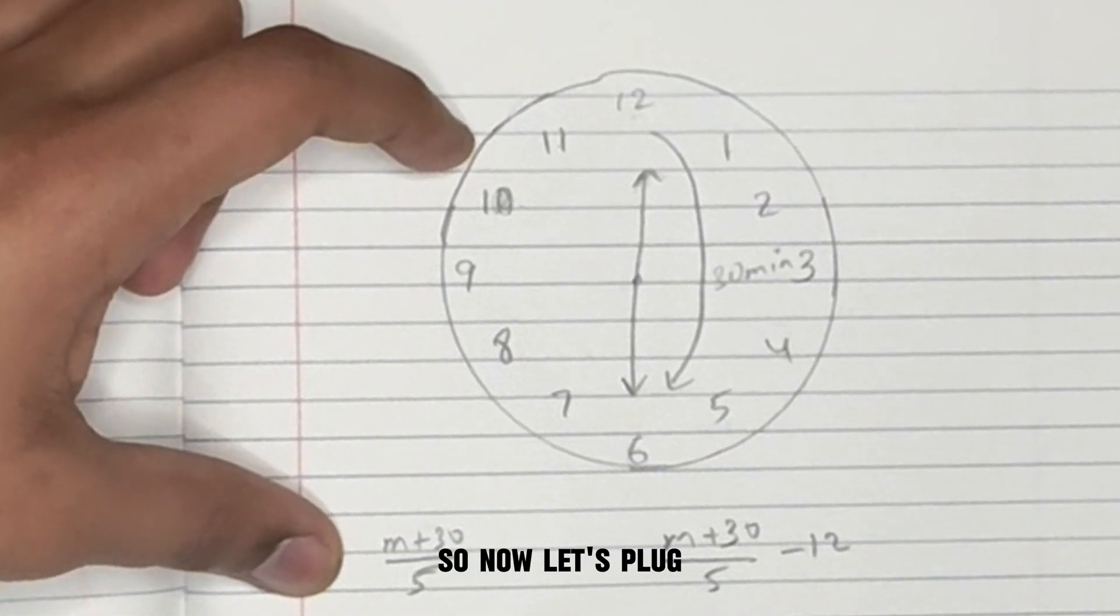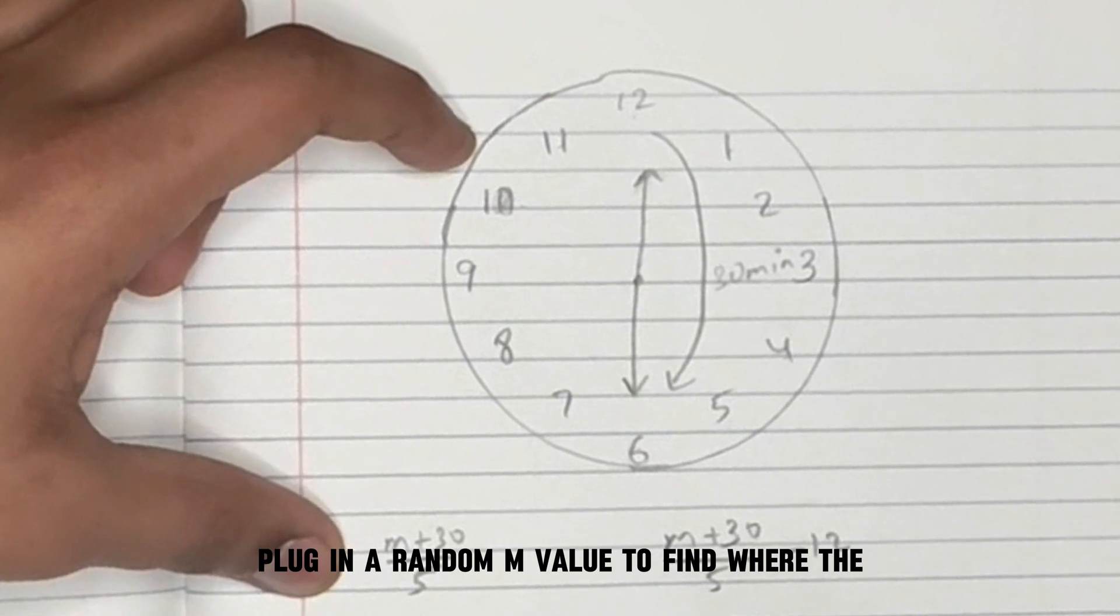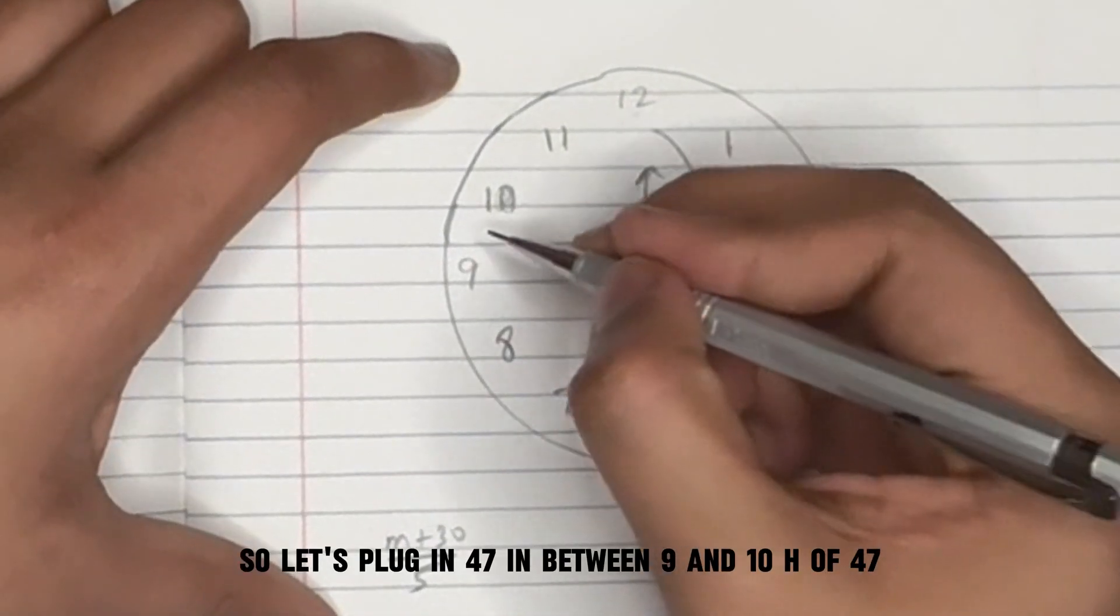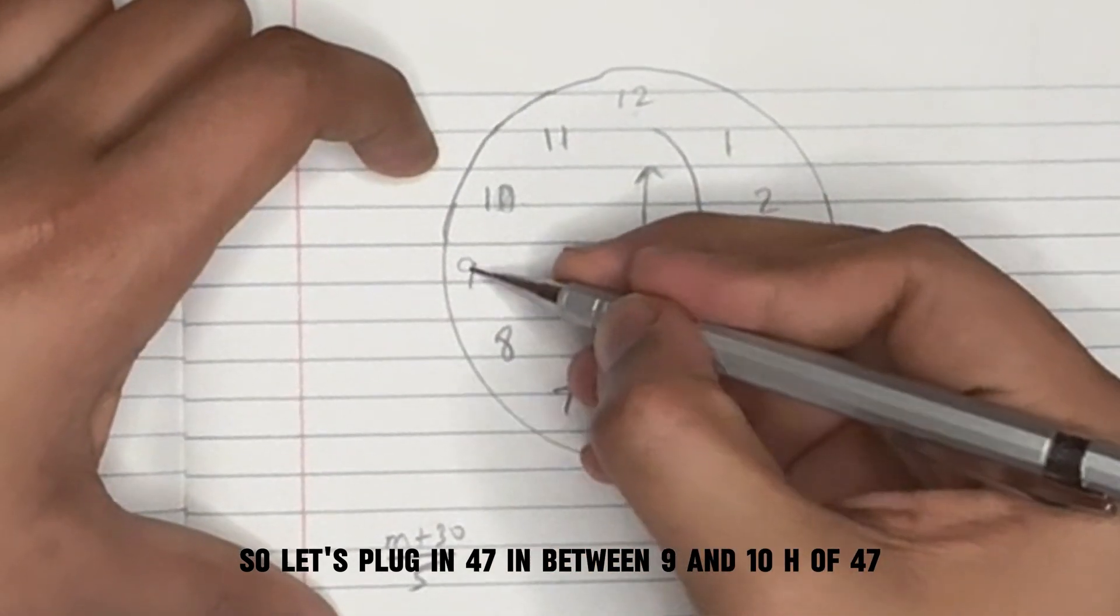So now let's plug in a random m value to find where the hour hand will be. So let's plug in 47, in between 9 and 10.